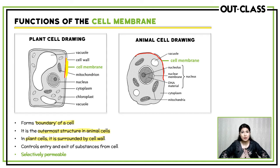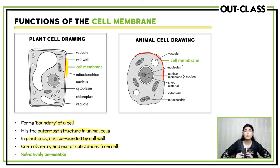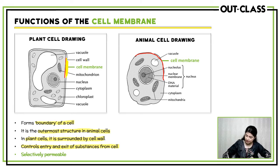A very important function of the cell membrane: you've seen checkposts — when you go to a checkpost, you show your ID card. They sometimes let you in, and if you don't have the correct documents, they don't let you in. The cell membrane is just like a checkpost in that it controls the entry and exit of substances from the cell. It's not going to let everything pass through it. If you have the correct structure and correct function, the cell membrane will let you pass, but if you don't, it will not.